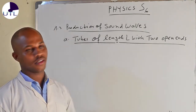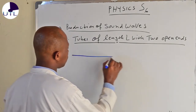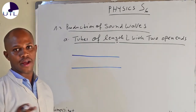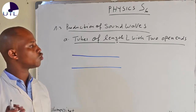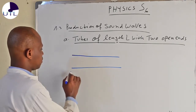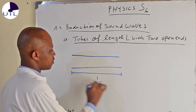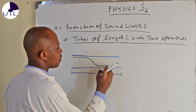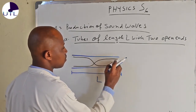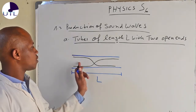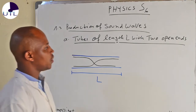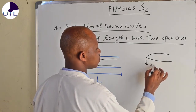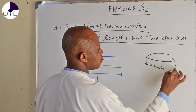Let us take an example where we have a pipe like this. Our pipe is open at both ends. If it is open at both ends, the distance from here to here, let's call distance L0. We have this wave. Don't you see that we have two consecutive antinodes? When you have a wave like this, this is a node, and here, that is an antinode.